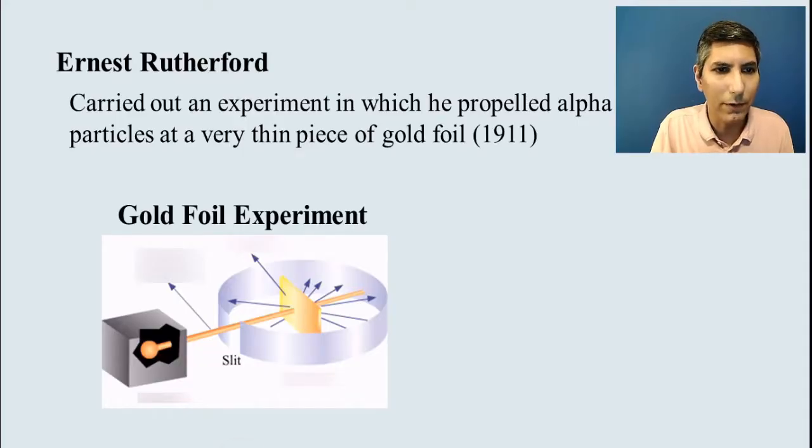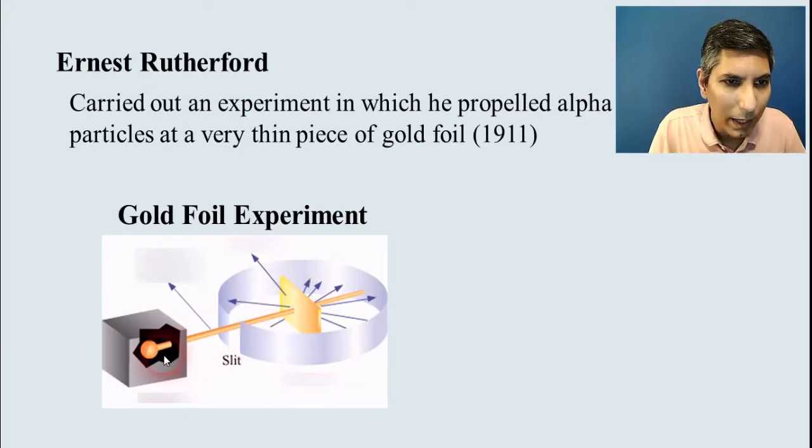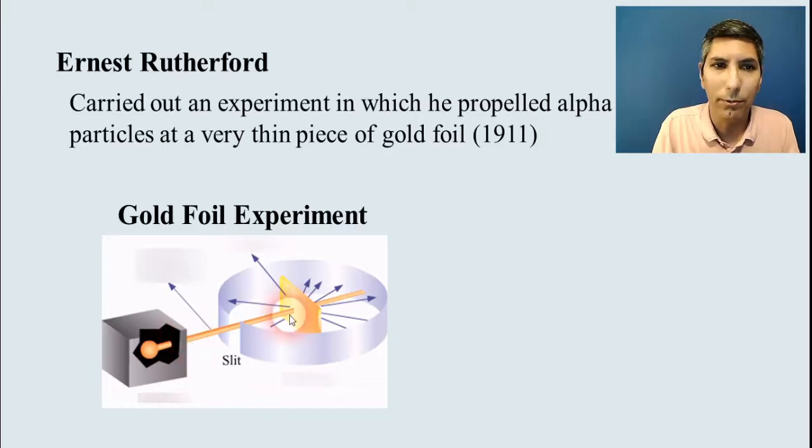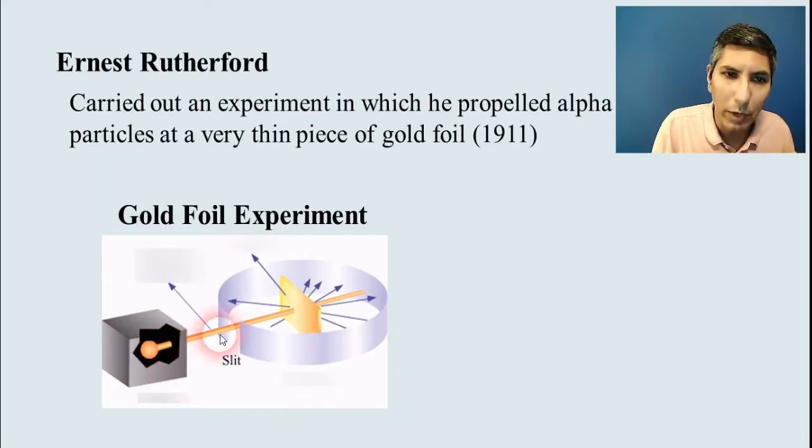Now, this is a little picture or kind of a cartoon of how this worked. He set up this gold foil here, and he had a device that essentially shot these alpha particles at the gold foil. Now, in his idea, if the plum pudding model was correct, pretty much all of those alpha particles would have gone straight through the gold foil.